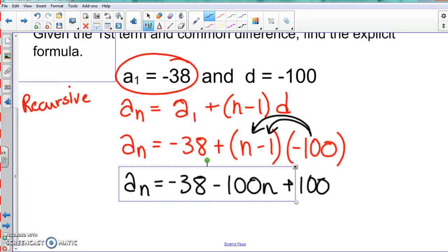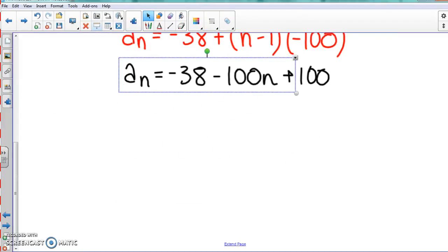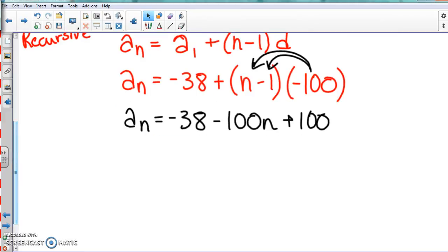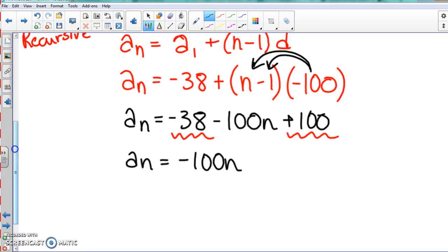Okay, so we have this, and the last thing is just combining like terms and we're done. That's going to be our explicit formula. We combine those two—we should get 62, not 68. So our final explicit formula is aₙ = -100n + 62.